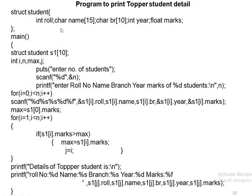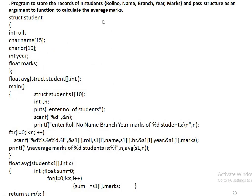Second program: finding the topper student. A student structure is created and all entries are filled. The topper search is based on the marks member variable. We assume the first student (index 0) has the maximum marks. Then from the second student onward, each student's marks are compared with the current maximum. If a student has higher marks, that becomes the new maximum and index j is updated. After the loop, all information of the jth student — the topper — is printed.